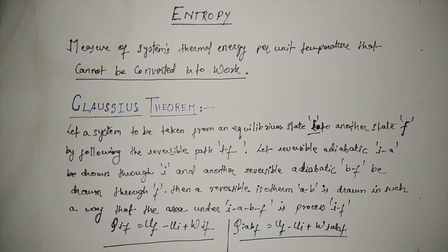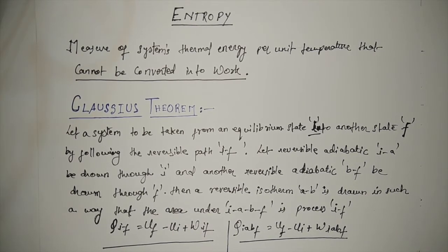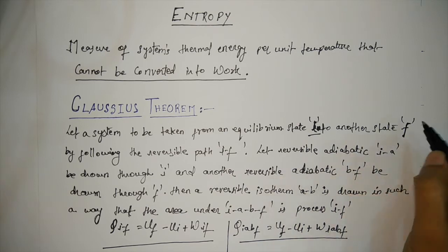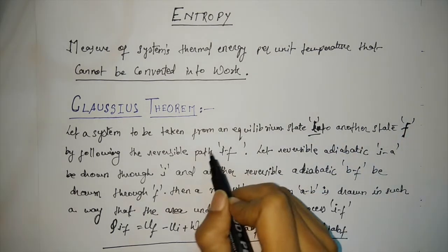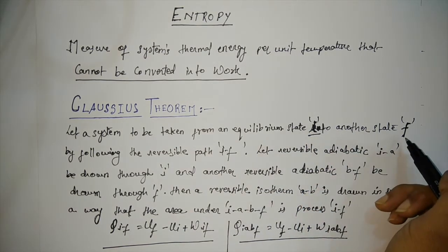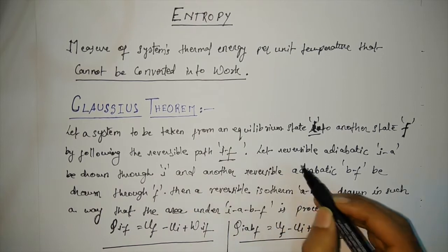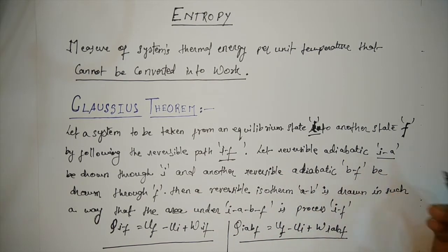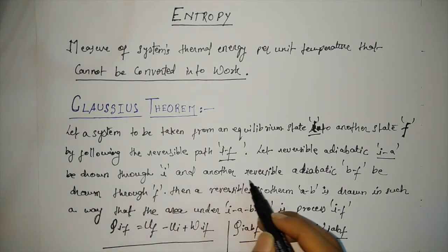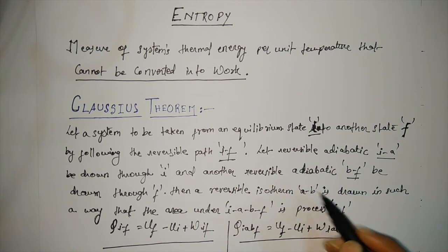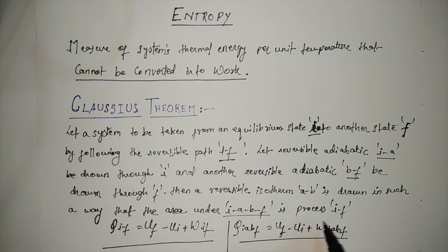Let a system be taken from an equilibrium state i to another equilibrium state f. If you take a system from equilibrium state i to another equilibrium state f by following the reversible path, let reversible adiabatic process ia be drawn through i and another reversible adiabatic bf be drawn through f, then a reversible isotherm ab is drawn such that the area under iabf equals process if.